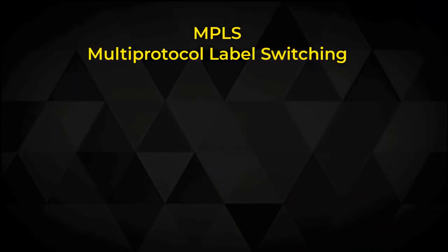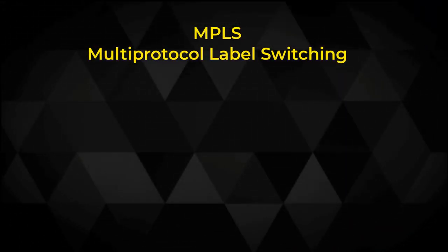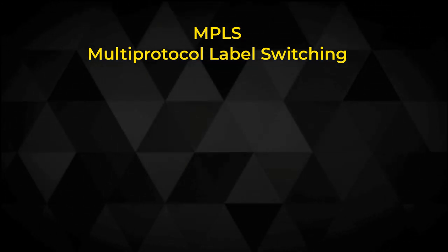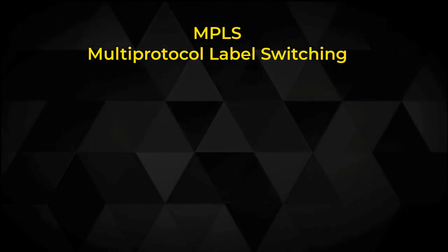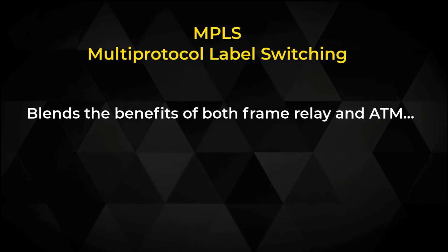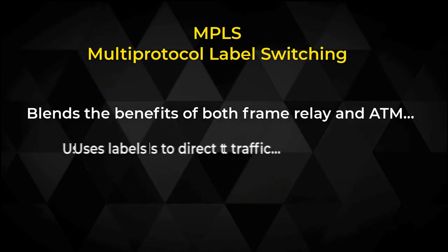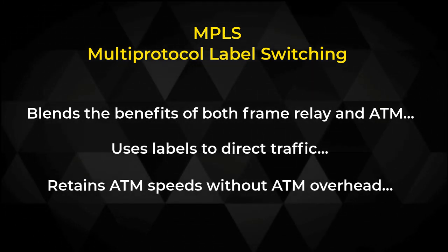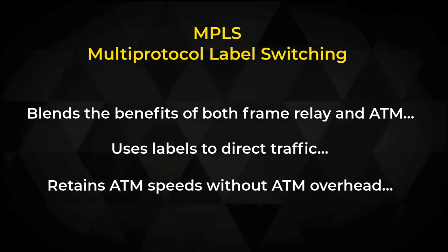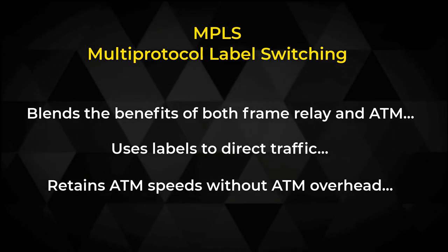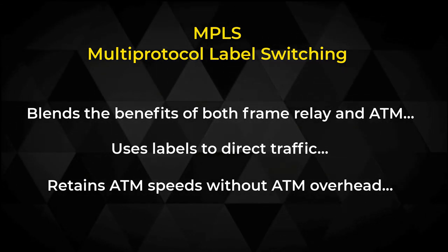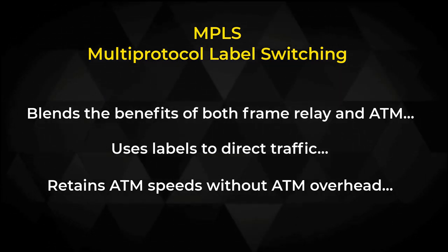The use of only Frame Relay or ATM WANs gave way to MPLS, a protocol that blends the benefits of both, using labels to direct traffic. It retains the speed of ATM without some of the ATM overhead, operating on the fence between OSI layers 2 and 3.